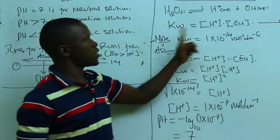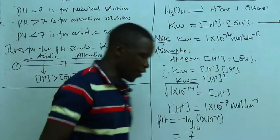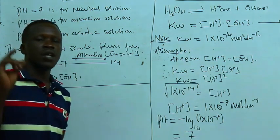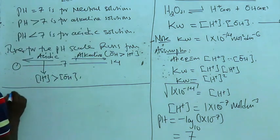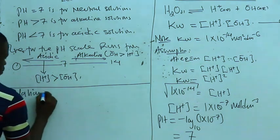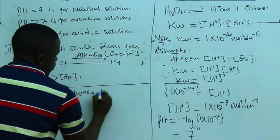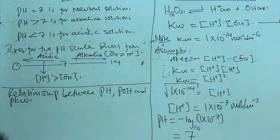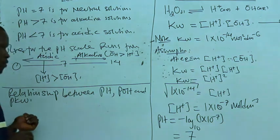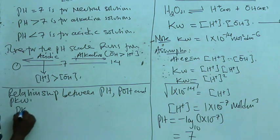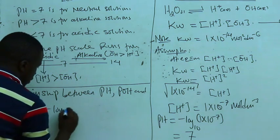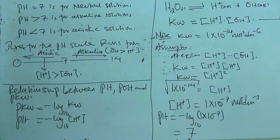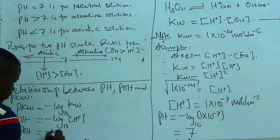If we know the OH⁻ ion concentration and we know Kw, then we can always get the hydrogen ion concentration. It is also possible to create another relationship between hydrogen ion concentration, hydroxyl ion concentration, and pH. We can establish a relationship between pH, POH, and what we call PKw — the potential of the ionic product of water. PKw means the negative log base 10 of Kw, and POH is the negative log base 10 of [OH⁻].